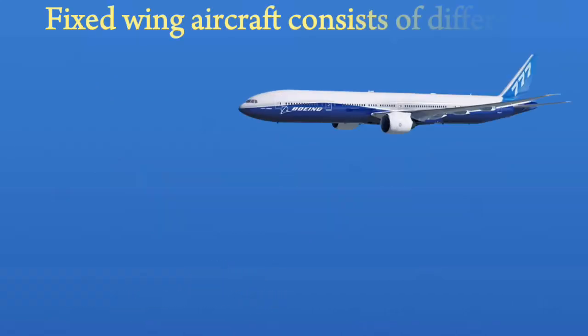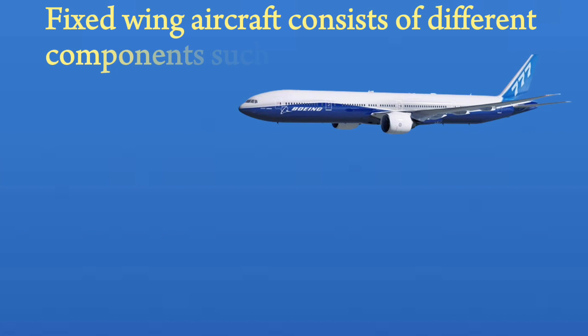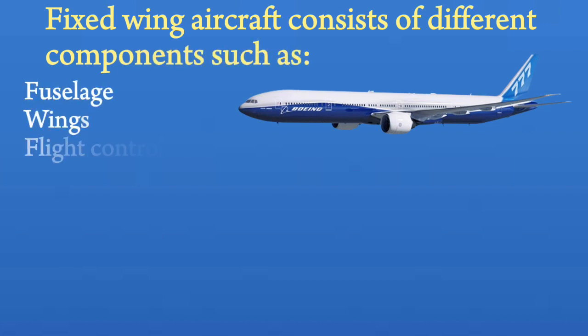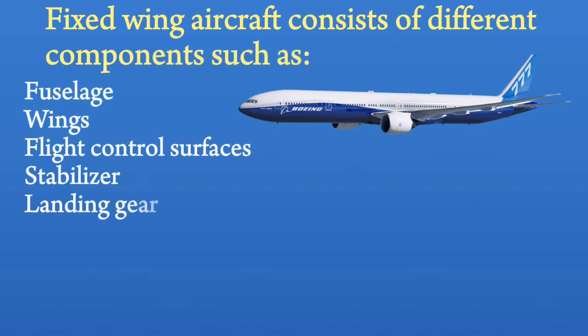Fixed-wing aircraft consists of different components such as fuselage, wings, flight control surfaces, stabilizer, and landing gear.